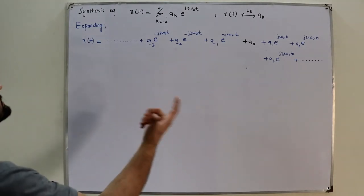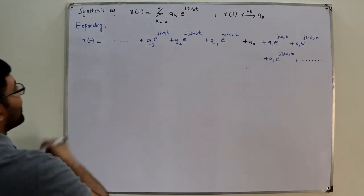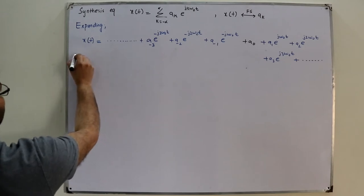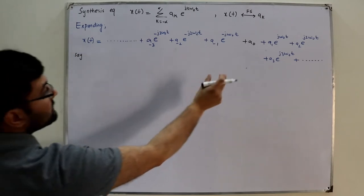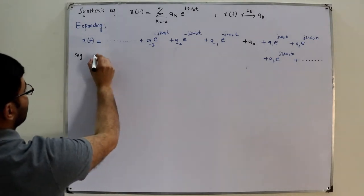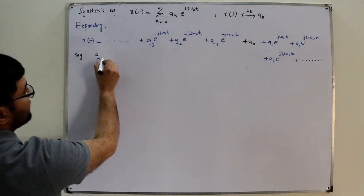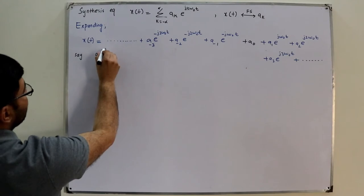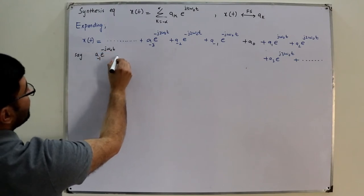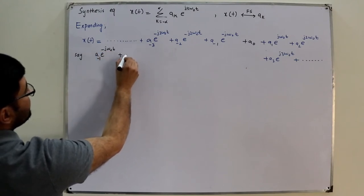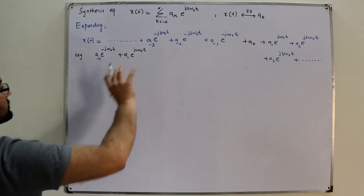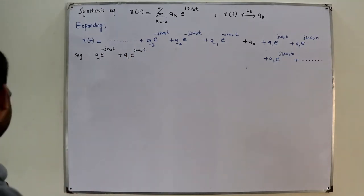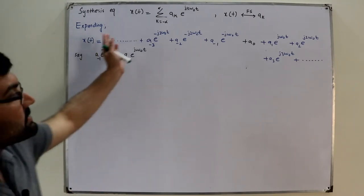Now consider any two terms of the same harmonic, the same frequency. For example, I consider the first harmonic: a₋₁·e^(−jω₀t) plus a₁·e^(jω₀t). This is what I have considered, because I am summing all of them and I take these two components.